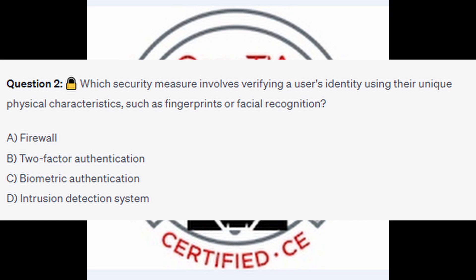Question number 2: Which security measure involves verifying a user's identity using their unique physical characteristics, such as fingerprints or facial recognition? Is it A Firewall, is it B Two-Factor Authentication, is it C Biometric Authentication, or is it D Intrusion Detection System?